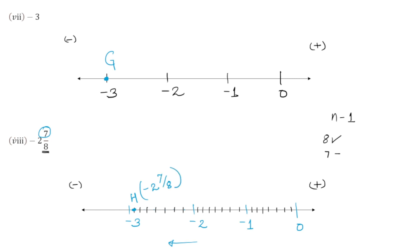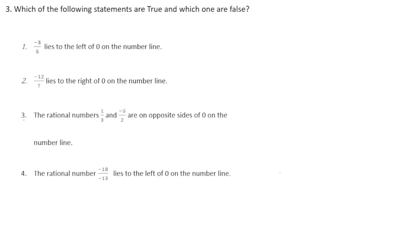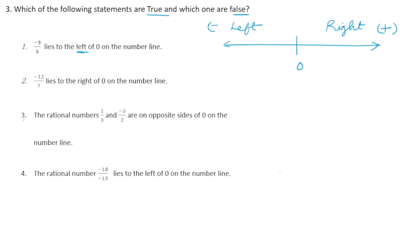Now let us do question number 3: state whether the statements are true or false. Statement 1: minus 3 by 5 lies to the left of 0 on the number line. Since minus 3 by 5 is a negative number, and negative numbers lie on the left of 0, this statement is TRUE.